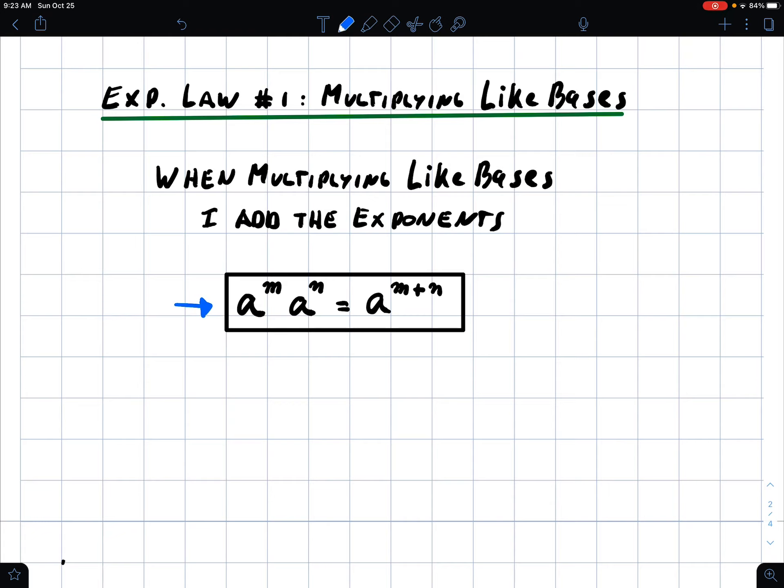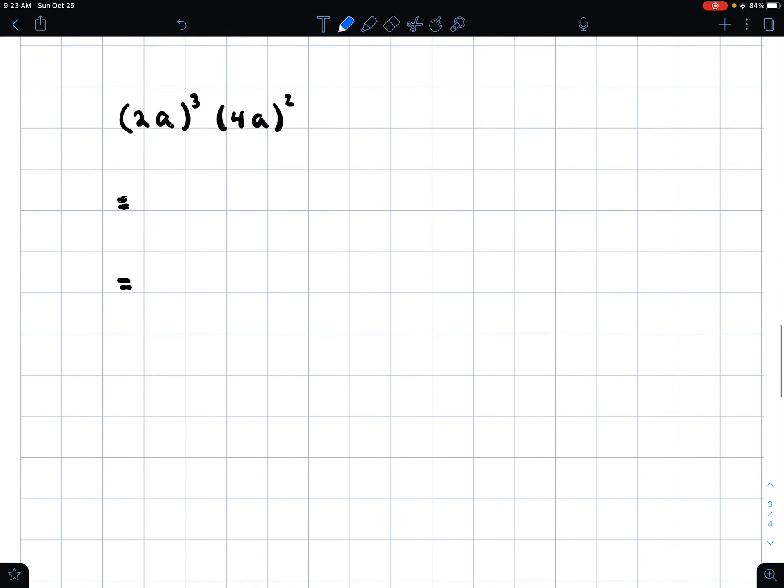And so here's an example: (2a) to the power of 3, everything to the power of 3, and (4a) to the power of 2. Okay, I'm going to start with the first bracket.